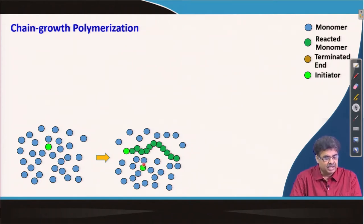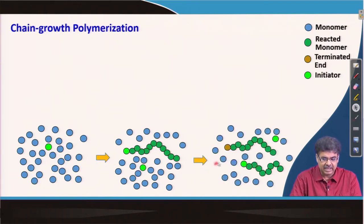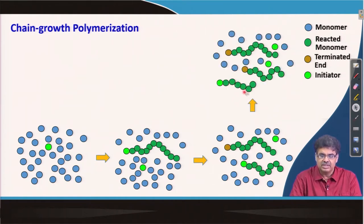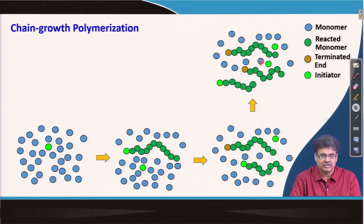With time, more and more initiator will generate and as a result more and more polymer chains will be produced. Some of these propagating radicals, cations, or anions will terminate the chain by statistical methods. More initiator activates over time, producing more chains, and we can stop the reaction whenever we want. If all the monomers react, we will have many such chains.